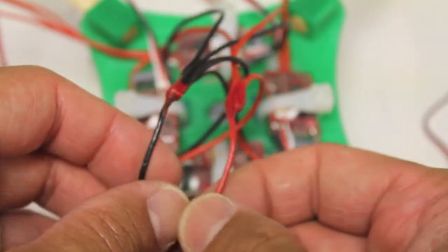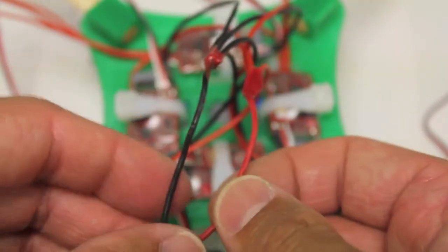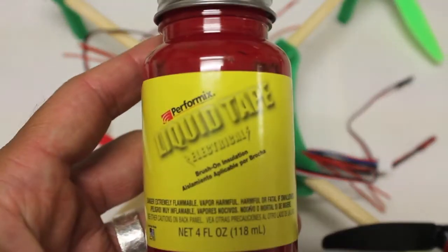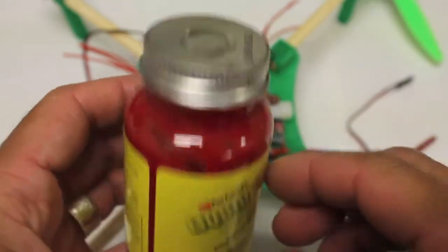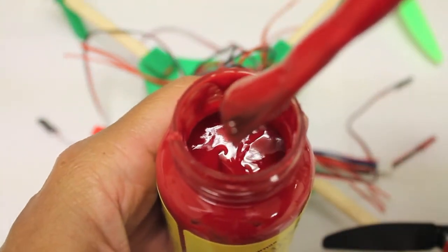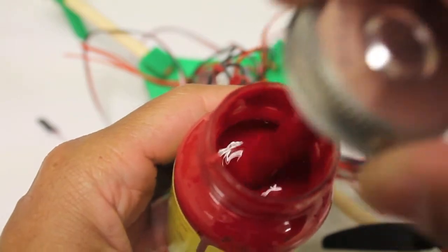Now I didn't have any heat shrink tubing and what I did was I purchased a bottle of this liquid electrical tape which I was pretty excited about. If you take a look at this stuff, it's real gooey and it's okay to work with.